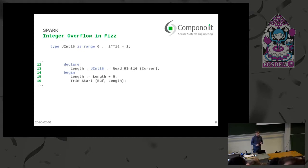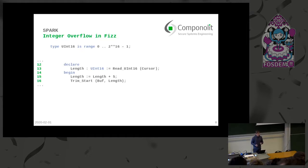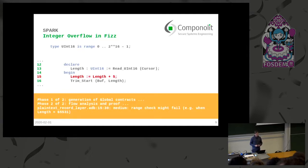Instead, we always define integer types with certain properties needed in this case. There are two different types: modular integers, which behave like C or C++ integers and allow overflow at any time, or range integers where we specify the allowed range — and those integers are never allowed to overflow. We use such an integer type for our length variable. When we run the verification tools on this code, the tools tell us that a range check might fail in line 15.